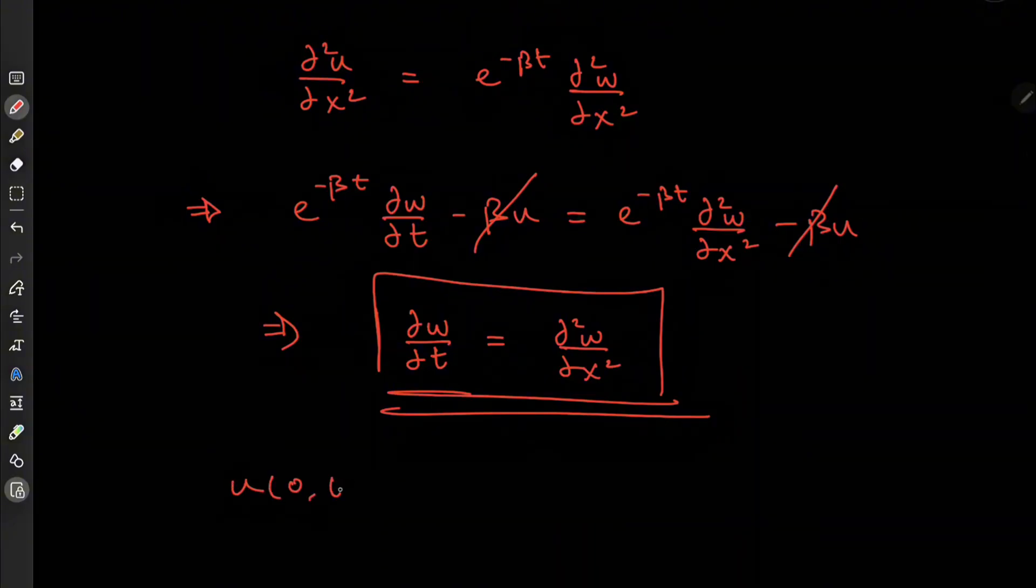So recall that u of 0,t is equal to 0, but this implies that e to the minus beta t, terribly sorry about that,